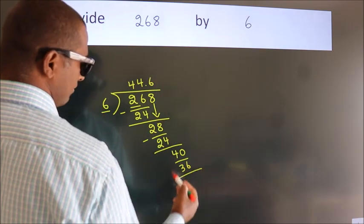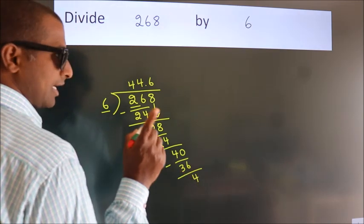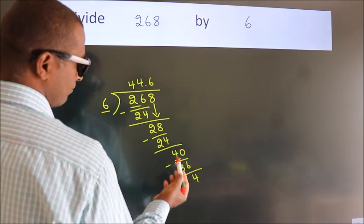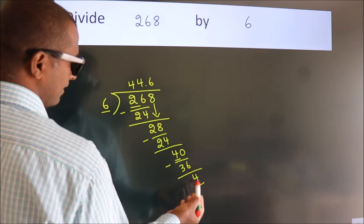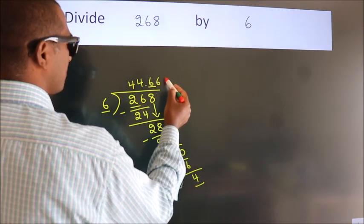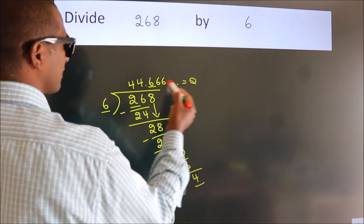Now we subtract. We get 4. Now you observe, we had 4 here and we got 4 again. That means this number keeps on repeating. So this is our quotient.